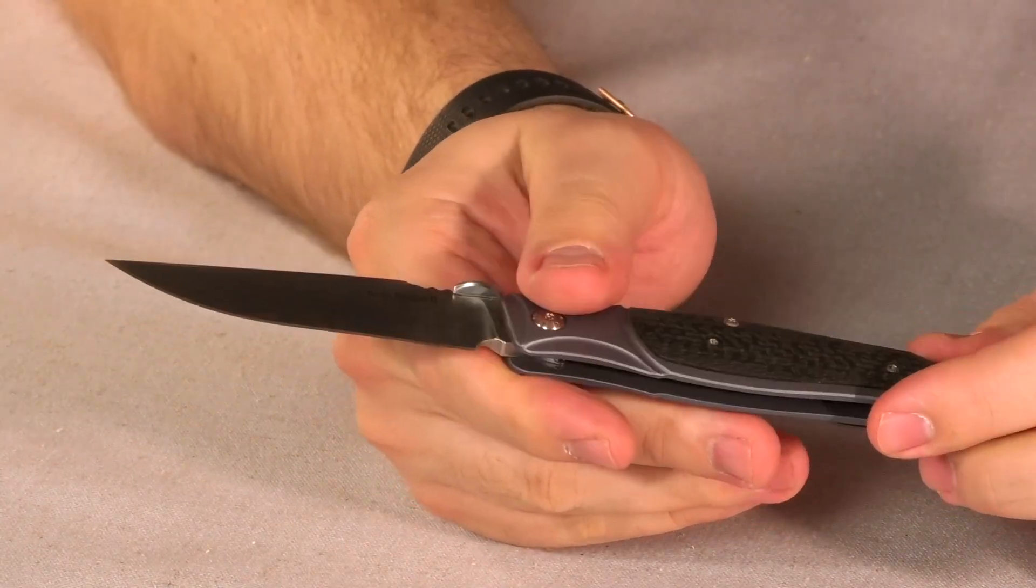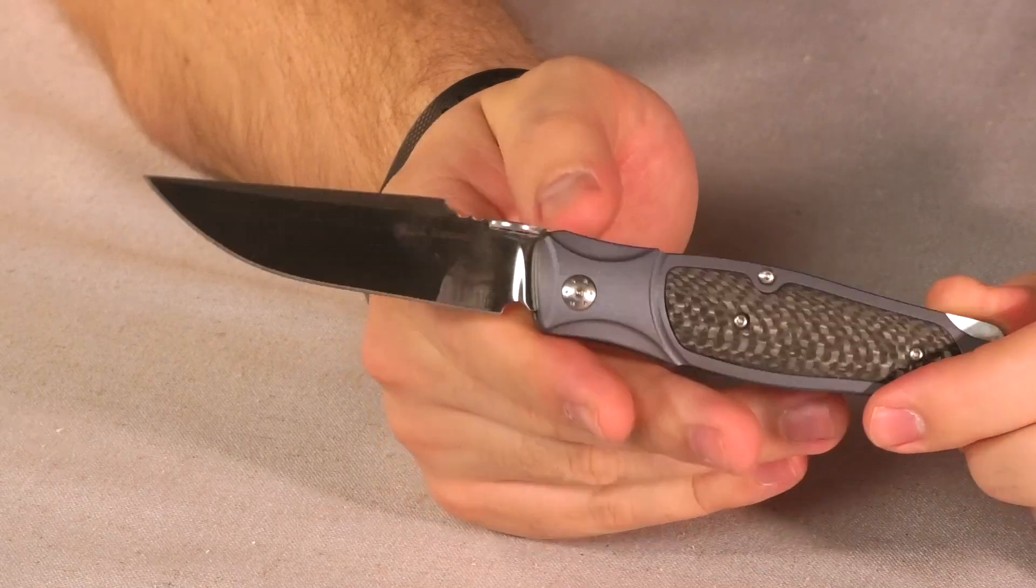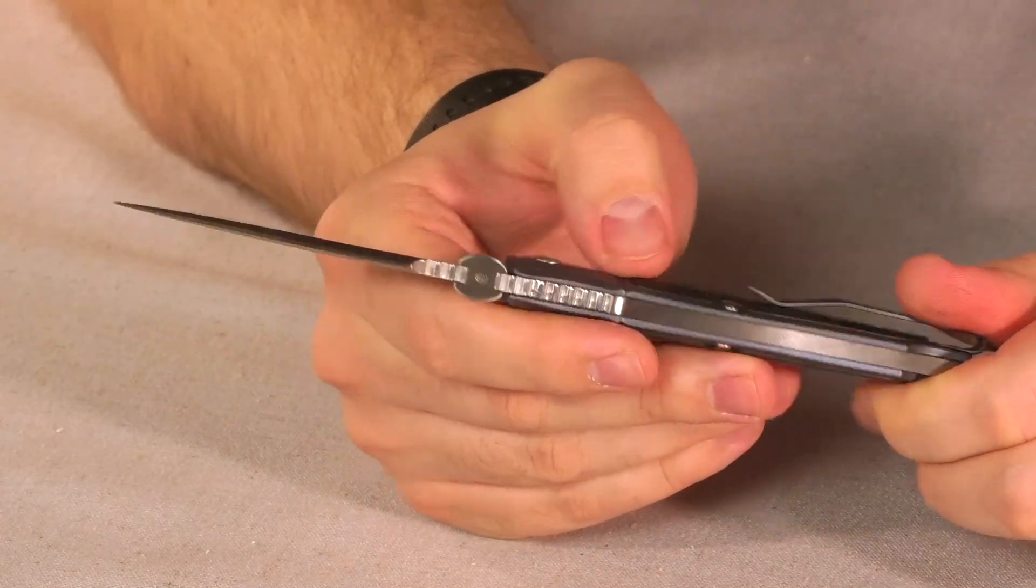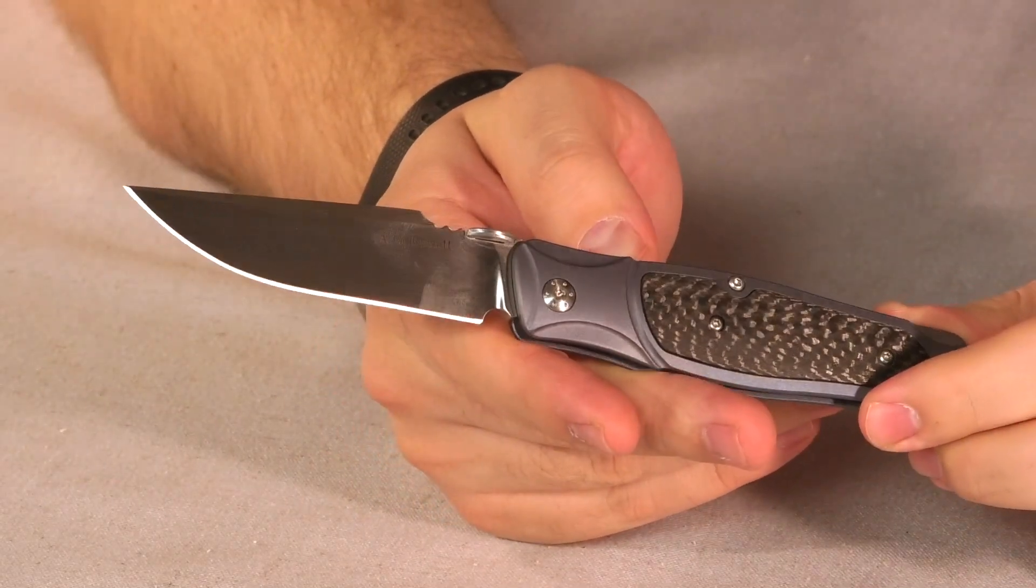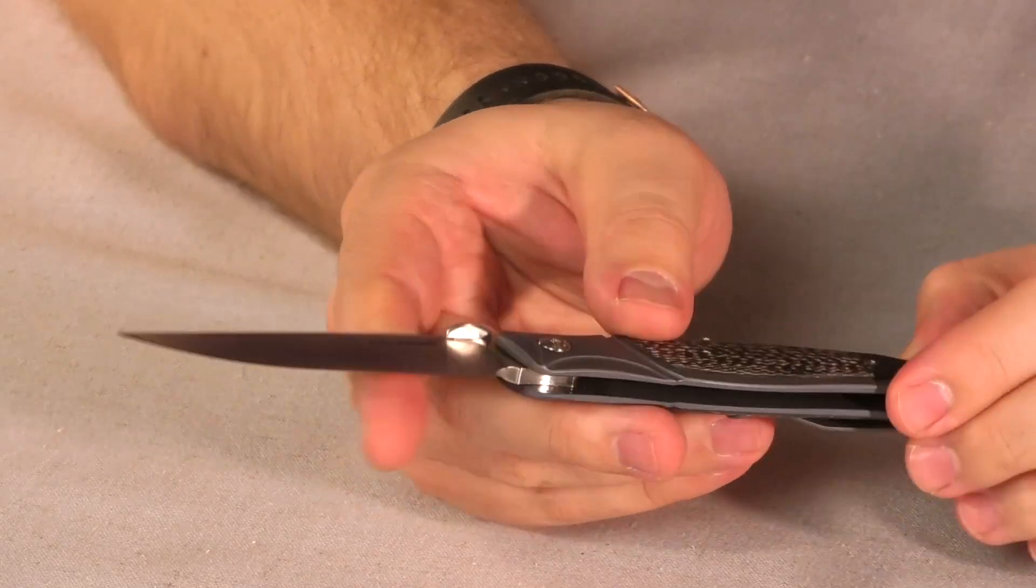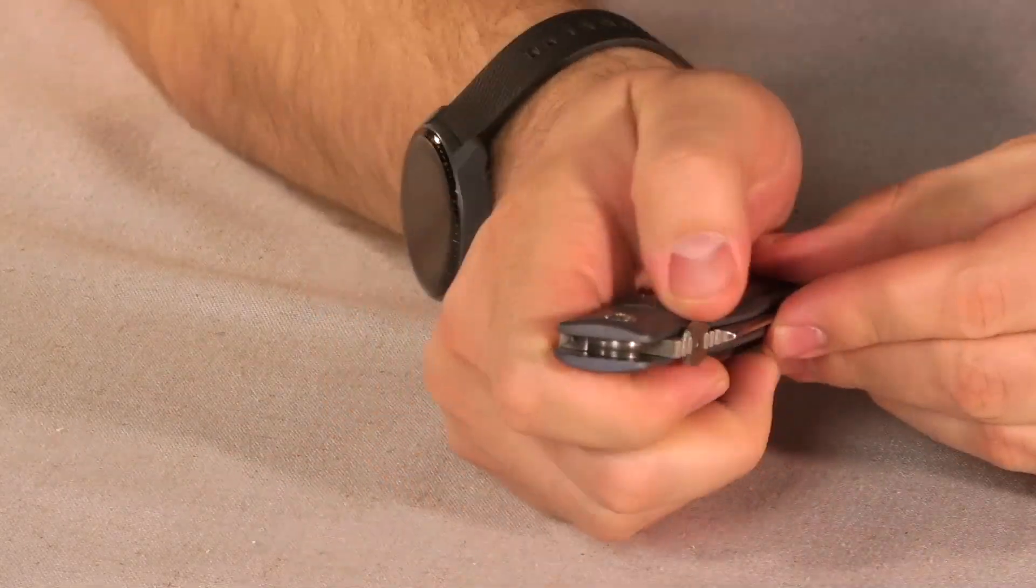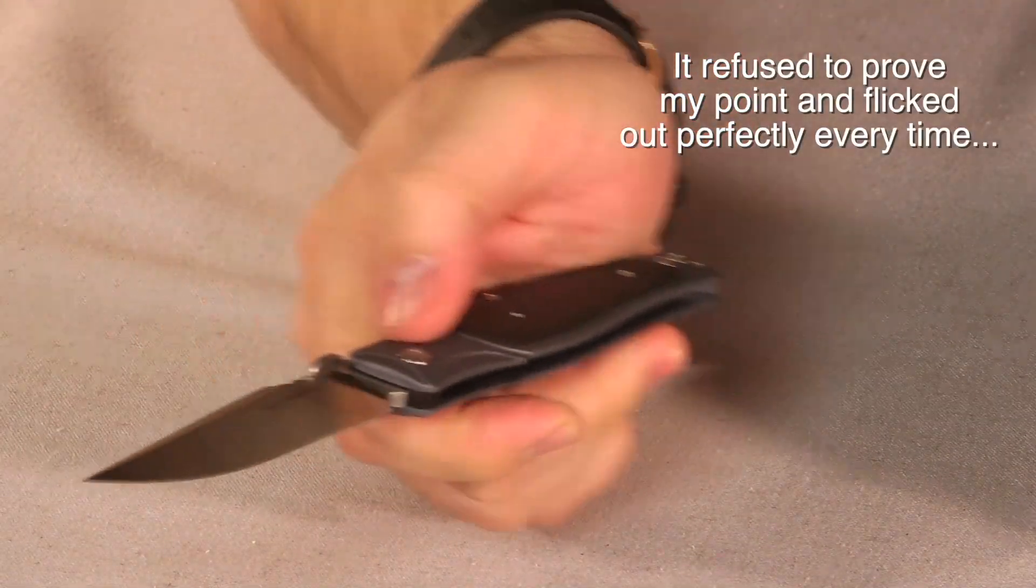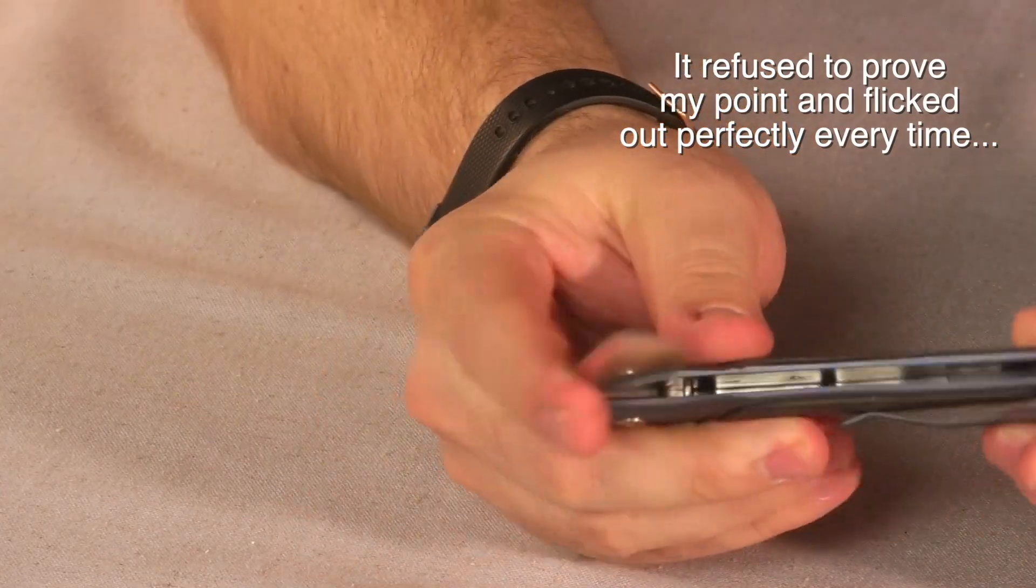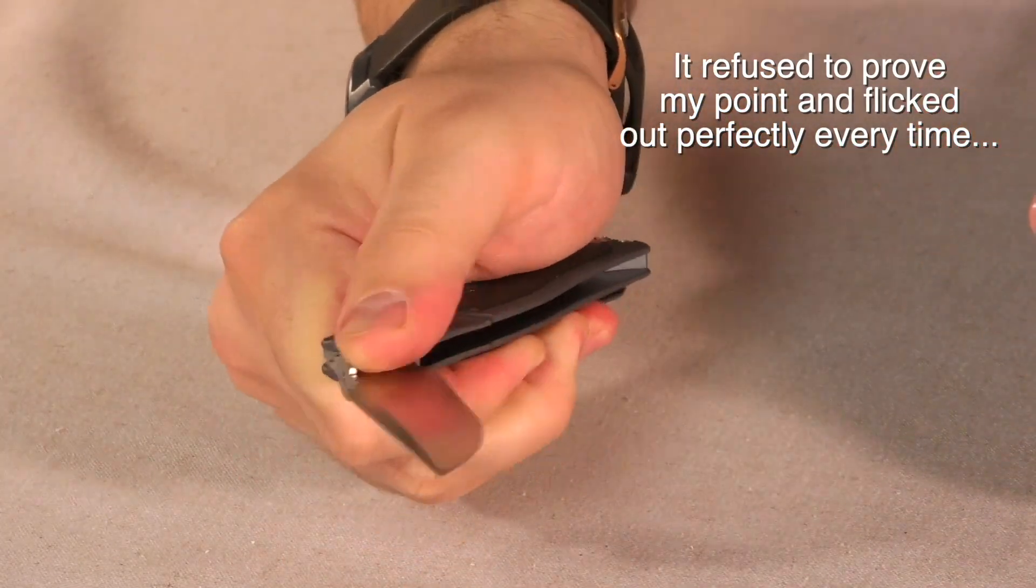There's not a whole lot of jimping on the thumb disc and by that I mean there's no jimping on the thumb disc. So it's not really a super fast open. You can't reliably flick it open. It's definitely going to be more of a slow open.